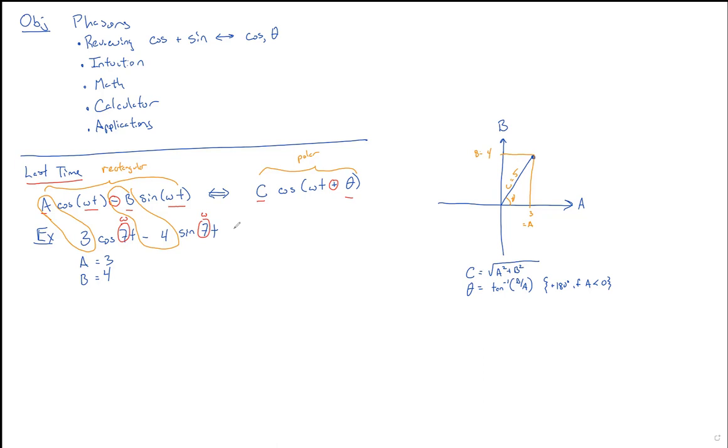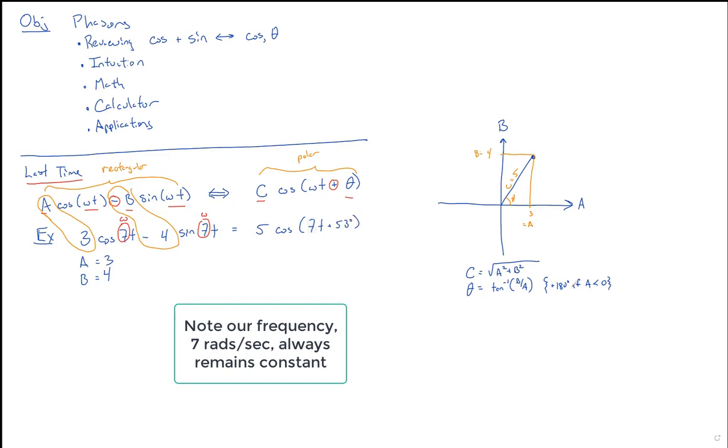And so in this particular example, we can say that three and four maps to five by this. And our angle, you can see it's greater than 45 degrees. It turns out to be about 53 degrees exactly, using the tangent inverse of four-thirds. And so that is how you can go back and forth.